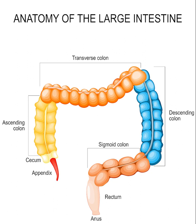In mammals, the large intestine consists of the cecum, including the appendix, colon, the longest part, rectum, and anal canal. The four sections of the colon are the ascending colon, transverse colon, descending colon, and sigmoid colon. These sections turn at the colic flexures.